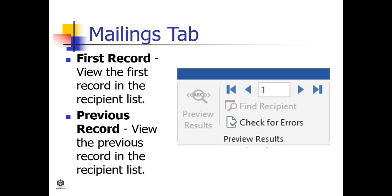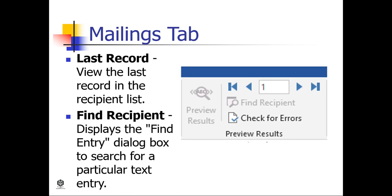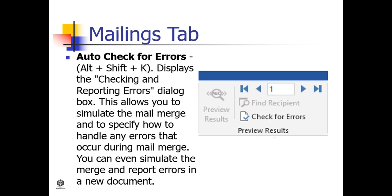First Record views the first record in the recipient list. Previous Record views the previous record in the recipient list. Go to Record views a specific record. Next Record views the next record. Last Record views the last record. Find Recipient displays the Find Entry dialog box to search for a particular text entry.